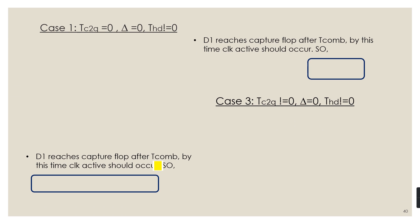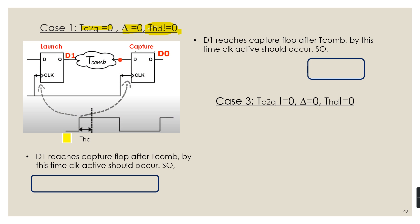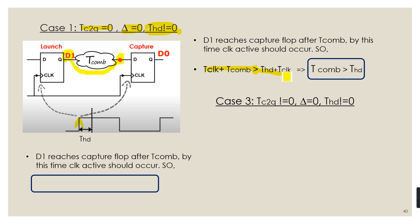Let us see a few cases. First, the ideal case: zero clock-to-Q delay, zero clock skew, but non-zero hold time. On the active edge of the clock, the launch flip-flop launches stable output D1 after zero time, and this data D1 takes T_com to reach the input of the capture flip-flop. To avoid the new data corrupting the already present data D0, it must arrive after the hold time. Since T_clock cancels from both sides, the condition simplifies to: T_com > T_hold.